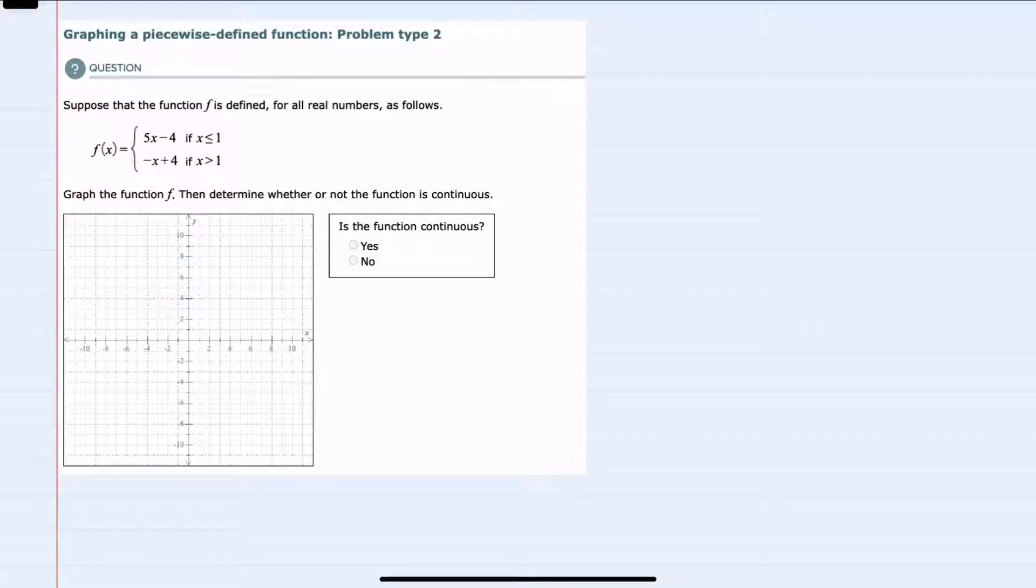We're given f of x, which is piecewise defined, so to graph I'll start with the first piece that says f of x is equal to 5x minus 4.